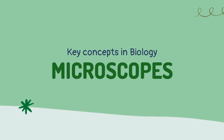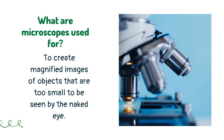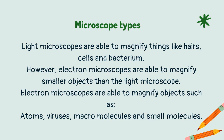Microscopes are used to create magnified images of objects that are too small to be seen by the naked eye. There are two types of microscopes: light microscopes and electron microscopes. Electron microscopes can be used to create magnified images of smaller objects than light microscopes.